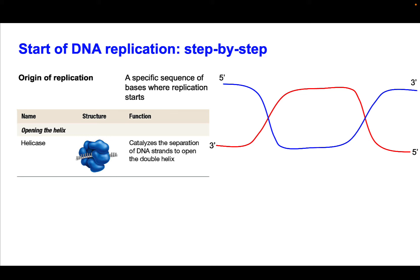Now we're going to start assembling enzymes at our replication fork. The first enzyme to introduce is helicase — essentially the zipper that unzips our DNA. This enzyme catalyzes the separation of DNA strands to open the double helix. What it's going to do is break apart those hydrogen bonds between the bases that are base paired.